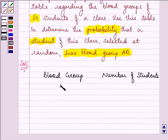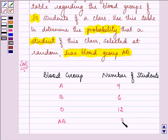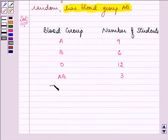Here we were given that blood group A, the number of students are 9. For B it was 6. For O it was 12. And for blood group AB there were 3 students. So there were a total of 30 students.